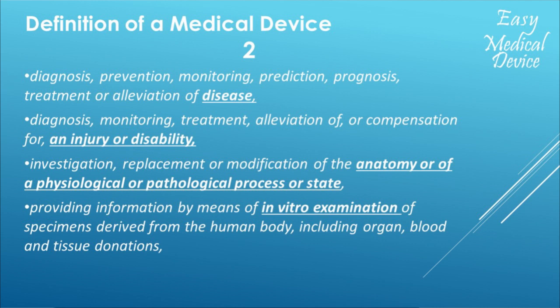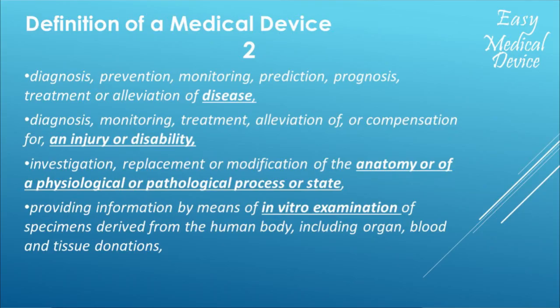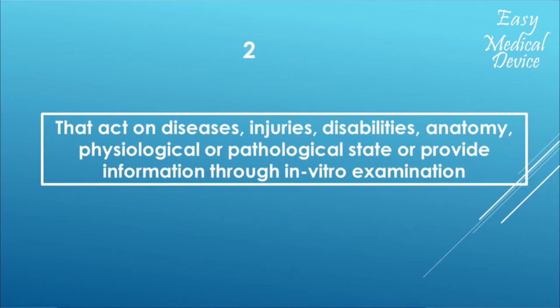Then: investigation, replacement or modification of the anatomy or of a physiological or pathological process or state. And the last one is providing information by means of in vitro examination of specimens derived from the human body, including organ, blood and tissue donation. How can I shrink this to one sentence? My proposal: something that acts on disease, injuries, disabilities, anatomy, physiological or pathological state, or provides information through in vitro examination.